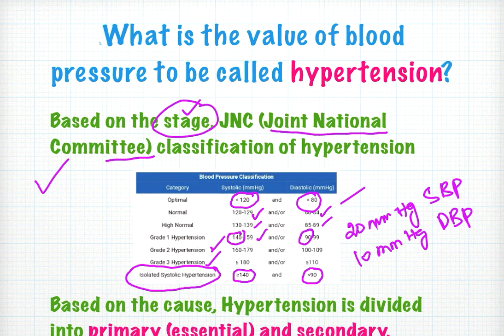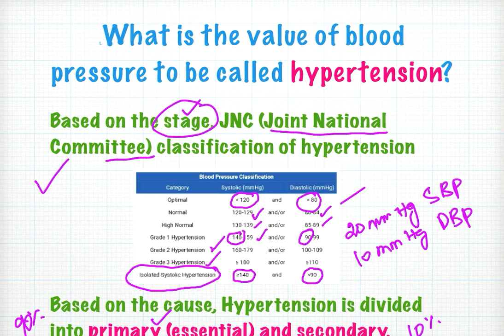When the question asks to classify hypertension based on cause, you can classify it into primary — otherwise called essential or idiopathic — which accounts for 90% of cases. The remaining 10% is secondary, due to causes such as renal conditions like chronic pyelonephritis and glomerulonephritis, hormonal causes including thyroid and adrenal tumors, and peripheral vascular diseases.